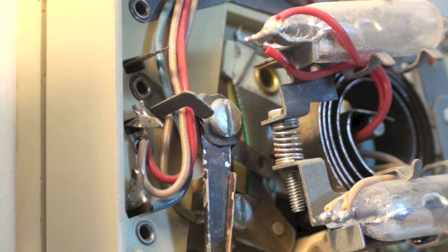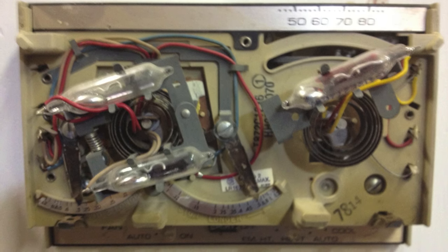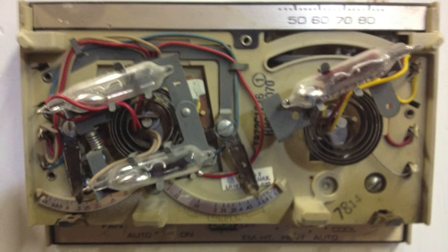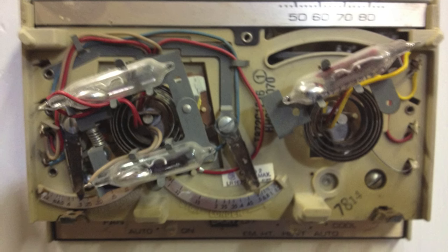On this one, and the other one was adjustable also. Okay, next we're going to go into how to check amp draw of the control circuit and adjust the anticipator accordingly in the next video.